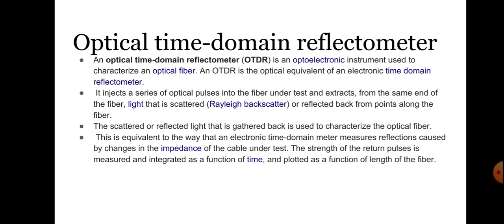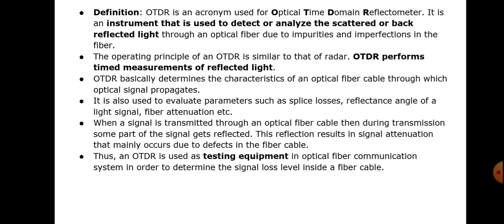We can find the fault or refractive index of the fiber using just one end of the fiber. OTDR is an acronym for Optical Time Domain Reflectometer — it is an instrument used to detect or analyze the scattered or back-reflected light through an optical fiber due to impurities and imperfections in the fiber. It works on the principle of Rayleigh scattering and frontal reflection.